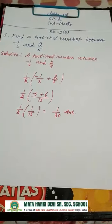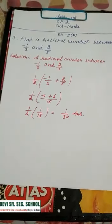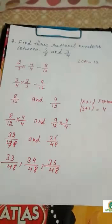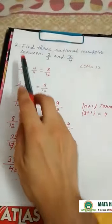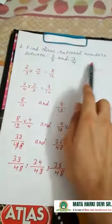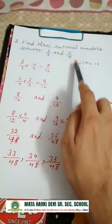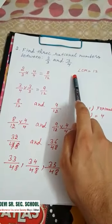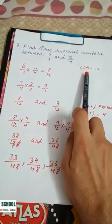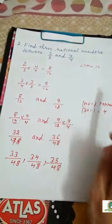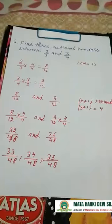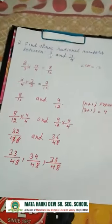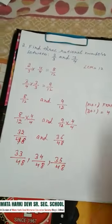Now second question: Find three rational numbers between 2 by 3 and 3 by 4. To find three rational numbers between two numbers, firstly you take the LCM of the denominators.